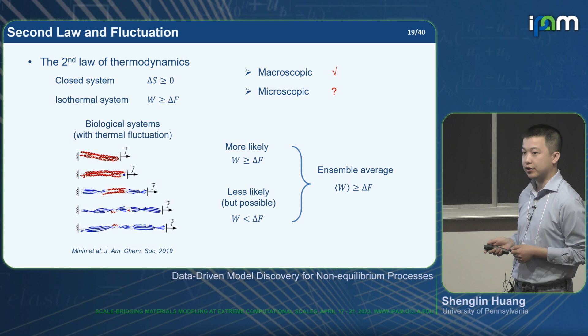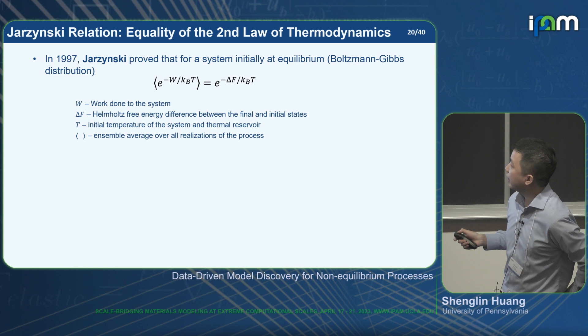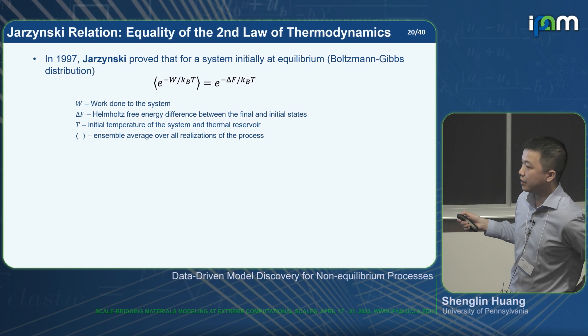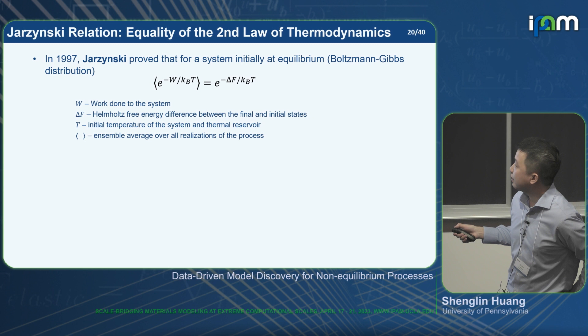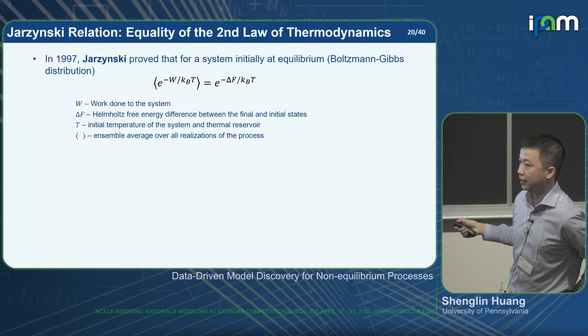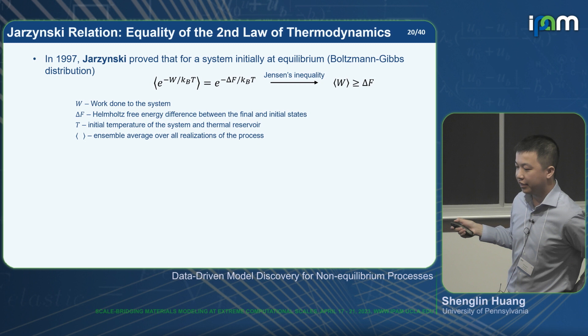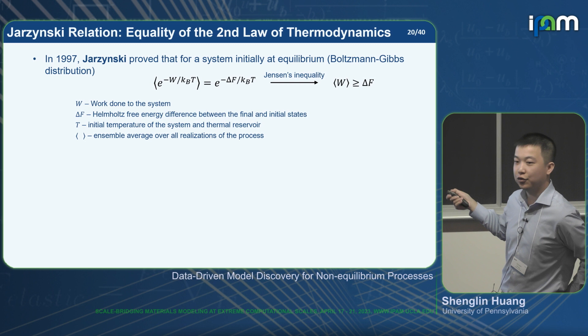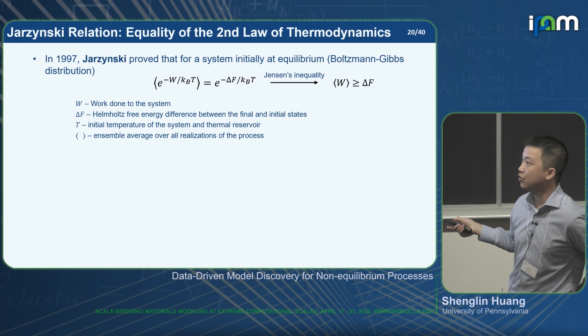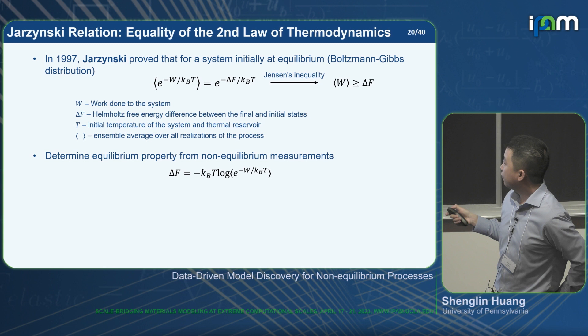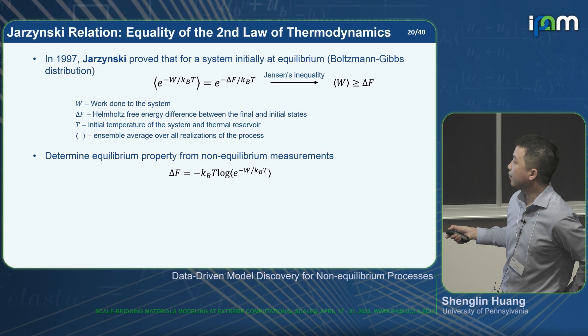In 1997, Jarzynski provided a relation — called the Jarzynski equality — stating that for a non-equilibrium evolution where the system starts from and ends at equilibrium, the ensemble average of the exponential of the work done on the system is related to the free energy change during this non-equilibrium process. Applying Jensen's inequality directly recovers the second law. So the Jarzynski relation is the equality form of the second law — proved for Hamiltonian systems and Langevin-type systems. From this equality we can determine the equilibrium property — the free energy change — from non-equilibrium measurements of work.